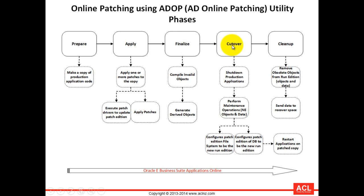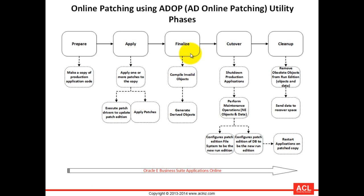In the finalize phase, you compile any invalid objects that may have arisen during patching and generate all derived objects. Once finalization is complete, you proceed to the cutover phase. Importantly, the preparation, application, and finalization phases all happen while users are online. In the cutover phase, you bring down the production system and swap the patch file system to become the run file system. The time that would otherwise have been spent preparing, applying, and finalizing is cut down since users remained online throughout.